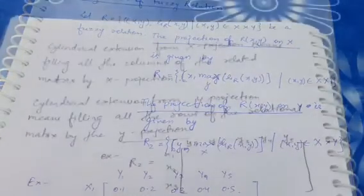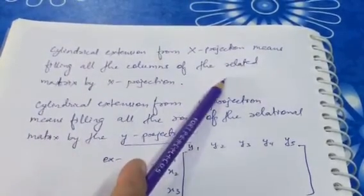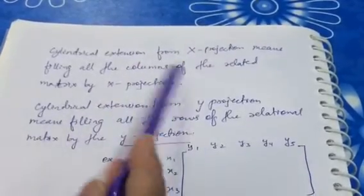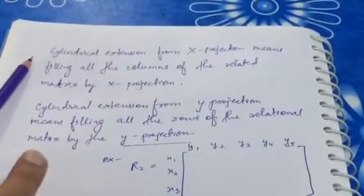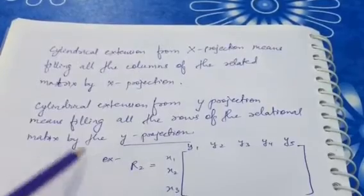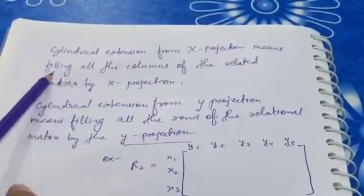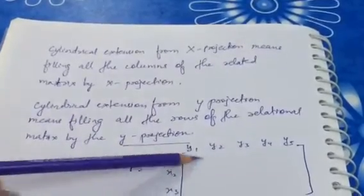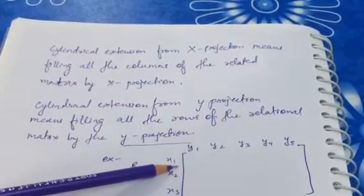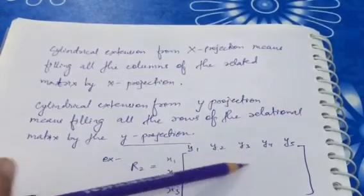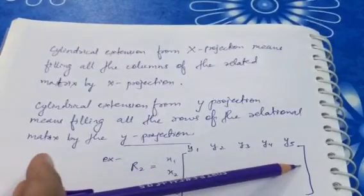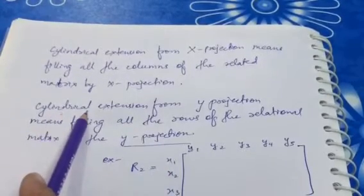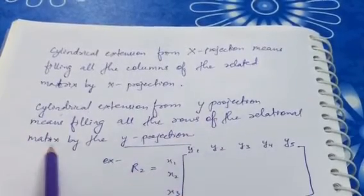Now we will see cylindrical extension. The cylindrical extension from X projection means filling all the columns of the related matrix with the X projection values. Since X has three elements x1, x2, x3, we have three rows, and in all columns of a given row we fill in the same X projection value for that row.